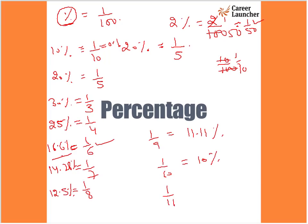1 by 11 is 9.09 percent. The values 1 by 9 and 1 by 11 are interrelated — 1 by 9 is 11.11 percent and 1 by 11 is 9.09 percent. Once you know these values, you can simplify further. For example, if a value like 2 by 9 appears in a question, since 1 by 9 is 11.11, then 2 by 9 will be twice of 11.11, which is 22.22 percent. So once you know these base values, you can easily convert multiples into percentages or fractions.